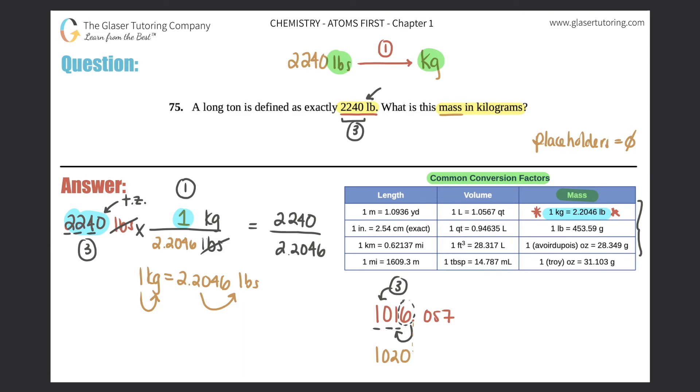You could either say 1,020 kilograms, because that's the unit we want here, or if you want to put it in scientific notation, it would be 1.02 times 10 to the third kilograms. Either answer is correct. They did not state whether they wanted it in scientific notation. They both have three sig figs, so both answers are correct.